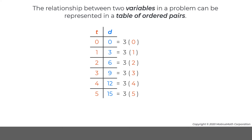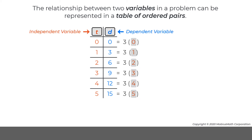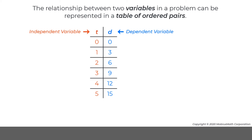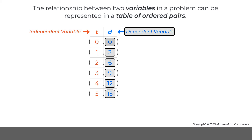Notice that in this table, the distance d that the remote-controlled car travels depends on the time t that the car has been moving. So, the dependent variable d has been calculated using the independent variable t. In an ordered pair, the value for the independent variable is listed first, and the value for the dependent variable is listed second.